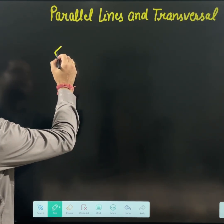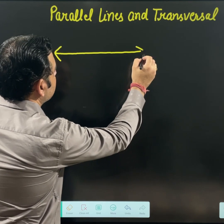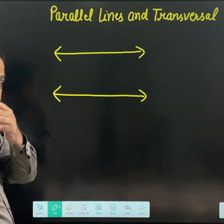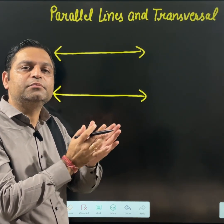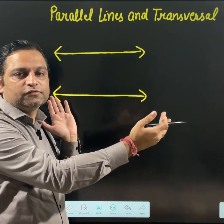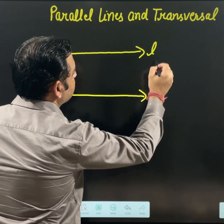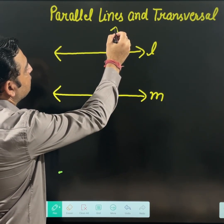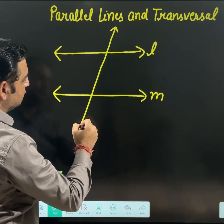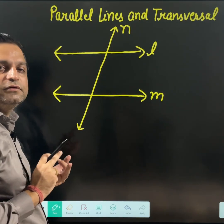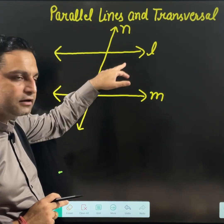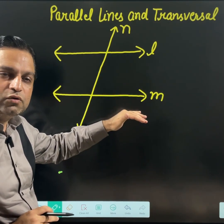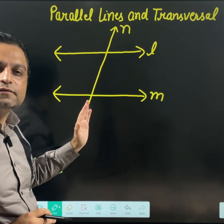Let us start with this concept. Suppose you have these two parallel lines — lines that never meet each other when extended on both sides. Let us say this line is named L and this line is named M, and this is a transversal N. A transversal is a line which intersects two other lines. So N is intersecting both L and M, that is why N is a transversal.